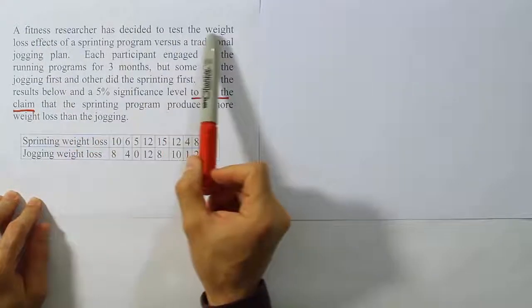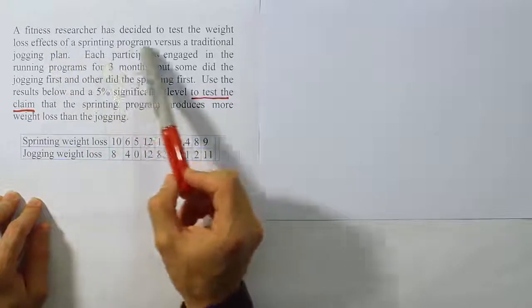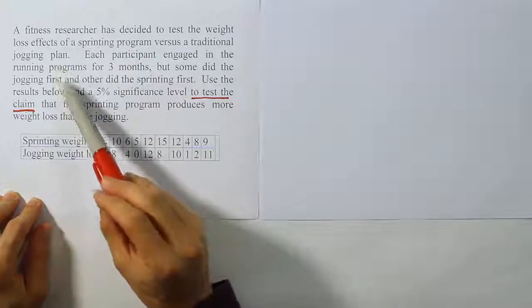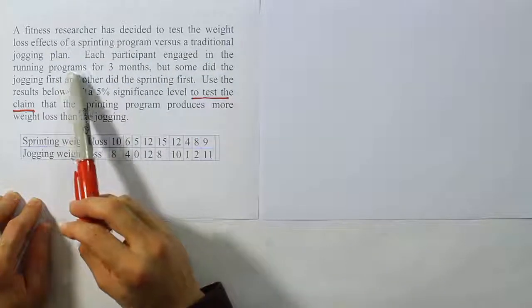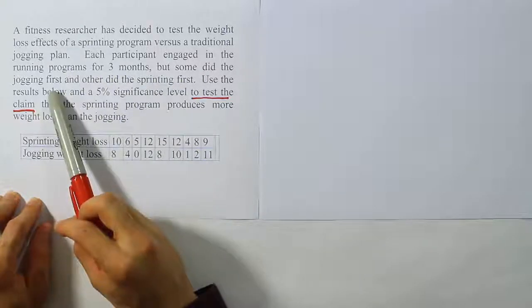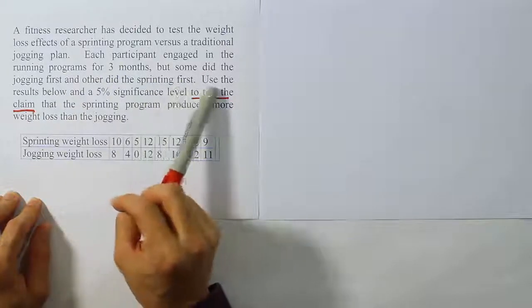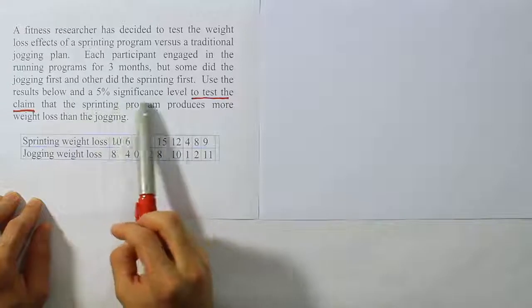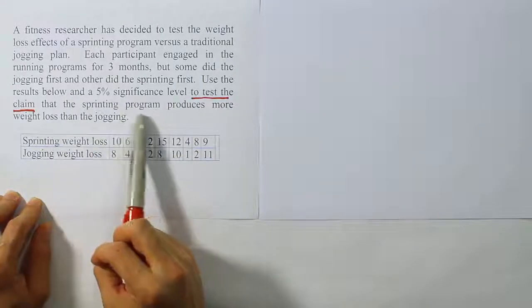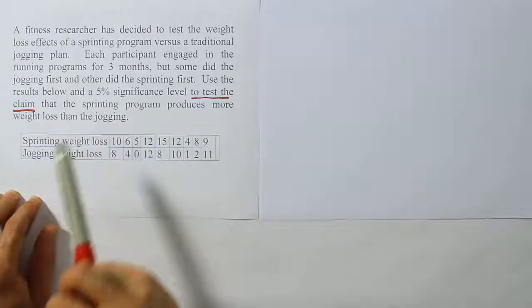A fitness researcher has decided to test the weight loss effects of a sprinting program versus a traditional jogging plan. Each participant engaged in the running programs for three months, but some did the jogging first and others did the sprinting first. Use the results below on a 5% significance level to test the claim that the sprinting program produces more weight loss than the jogging.